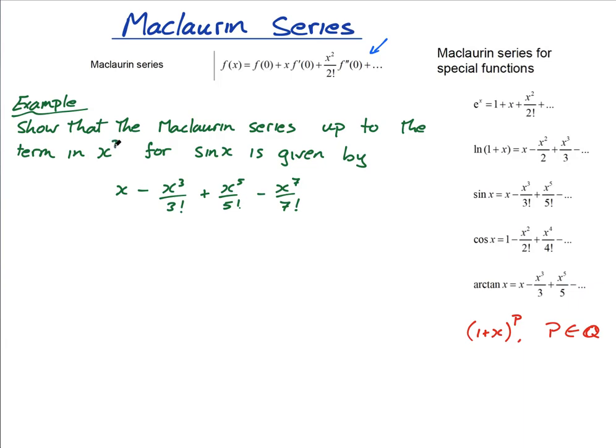Okay, so look, the Maclaurin series goes on forever, so in an exam whenever you're asked to find a Maclaurin series they're always going to tell you to stop somewhere. You can't write out the whole thing forever and ever. Sometimes they say the first four non-zero terms, sometimes they say the Maclaurin series up to the term in x to the power of whatever—x to the seven in this case.